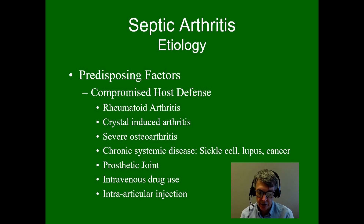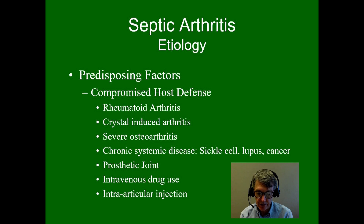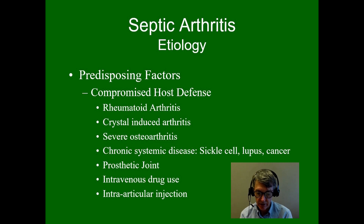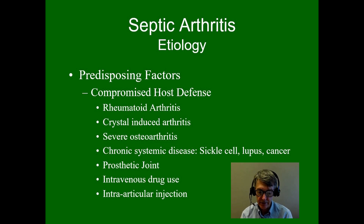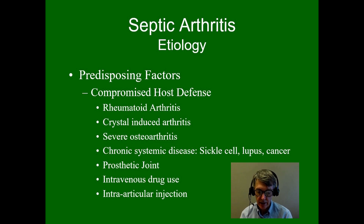Severe osteoarthritis, such as occurs in a Charcot joint, or hemarthrosis as seen in hemophilia, can leave one at risk. Chronic systemic diseases that suppress host defenses — including systemic lupus erythematosus, sickle cell disease, cancer, or the medications used to treat these — also increase risk. Prosthetic joints and any foreign body placed inside the body carry increased risk due to bacterial attachment during bacteremia. Intravenous drug use can cause recurrent bacteremia from dirty needles, and infections can be introduced iatrogenically during joint injection or surgery.